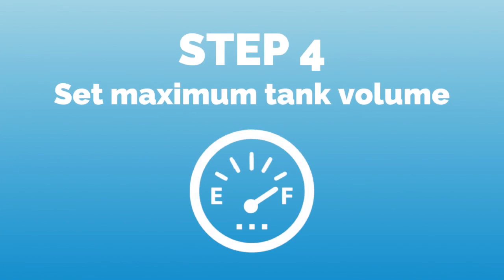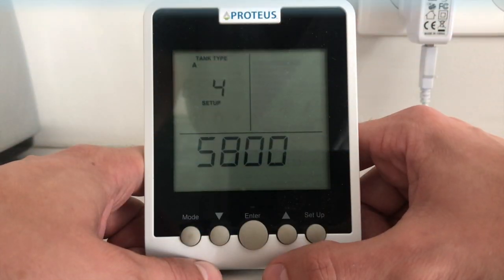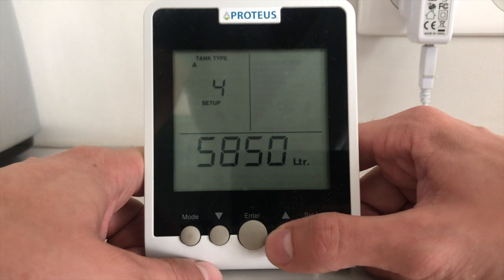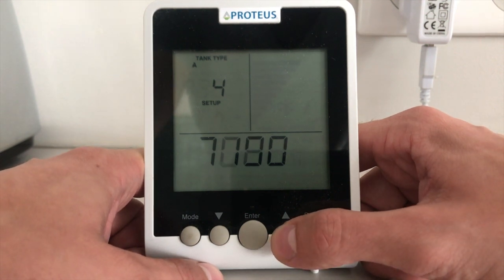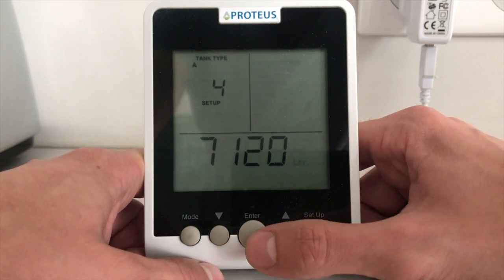After this, we set the maximum tank volume, which is either written on your tank or on your tank manual. Adjust by using the up and down arrows and press enter to save.